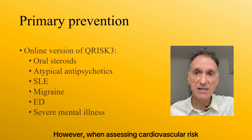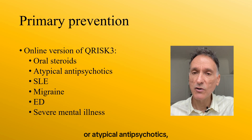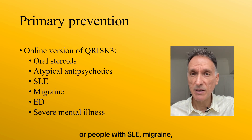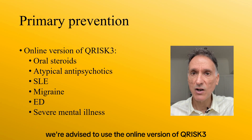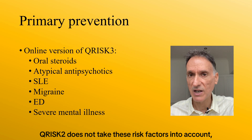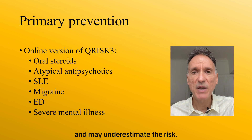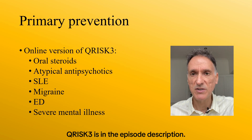However, when assessing cardiovascular risk for people taking steroids or atypical antipsychotics, or people with SLE, migraine, erectile dysfunction or severe mental illness, we're advised to use the online version of QRISK-3 because QRISK-2 does not take these risk factors into account and may underestimate the risk. A link to the online version of QRISK-3 is in the episode description.